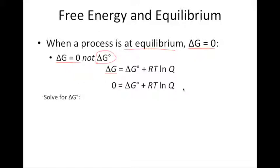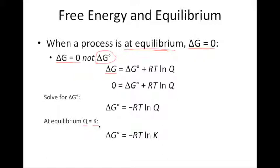We can rearrange it slightly to solve for ΔG standard. ΔG standard is equal to negative RT times the natural log of Q. Now if a process is at equilibrium, then Q is equal to K. So we substitute K for Q, giving us an equation that relates the standard free energy change for a reaction to the equilibrium constant for that reaction.